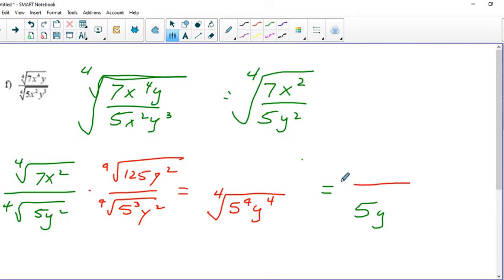And that's going to give me seven times that, 875, x squared, y squared, and the fourth root of that.